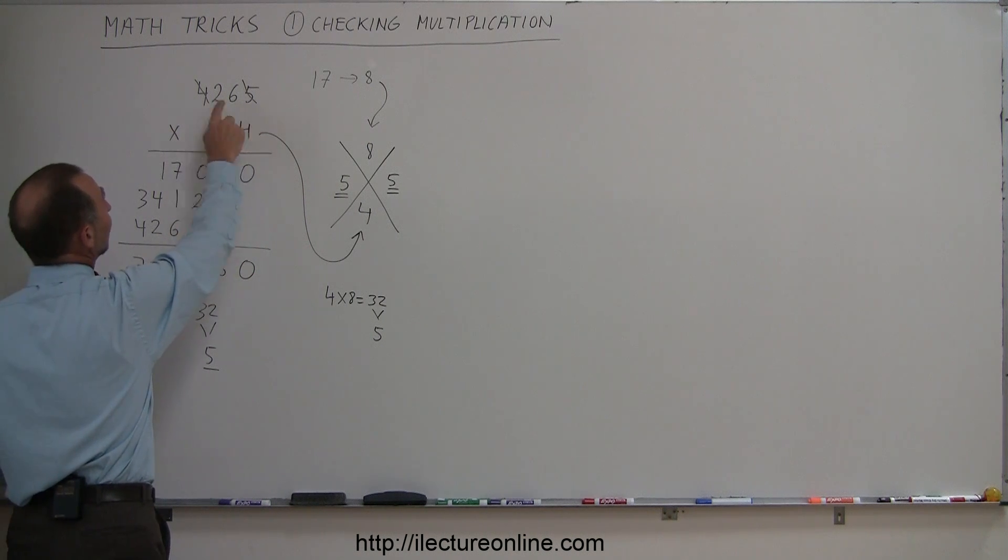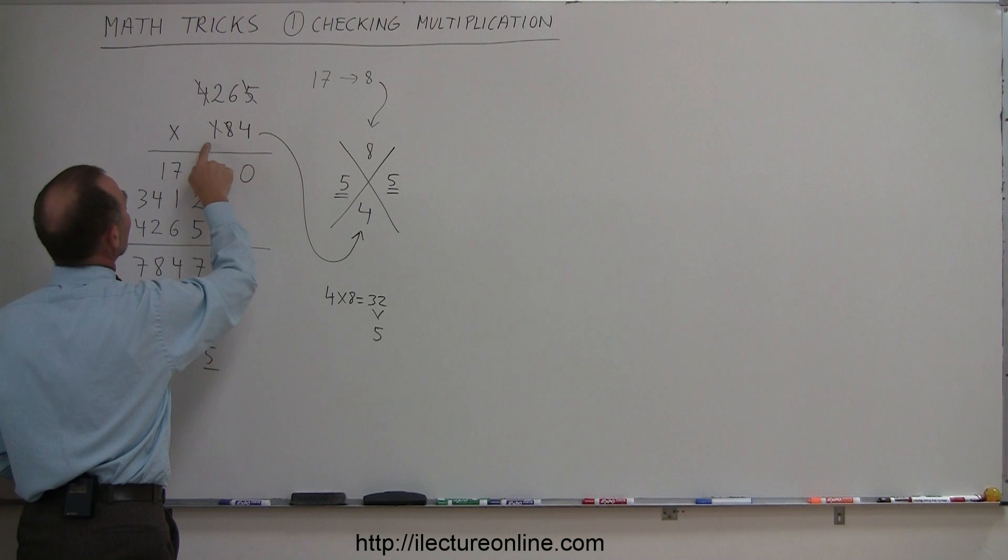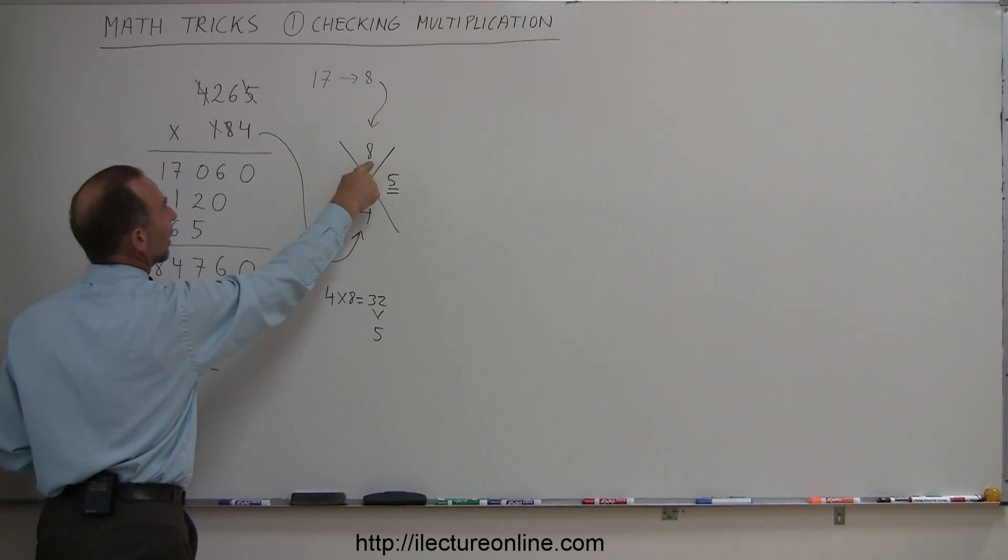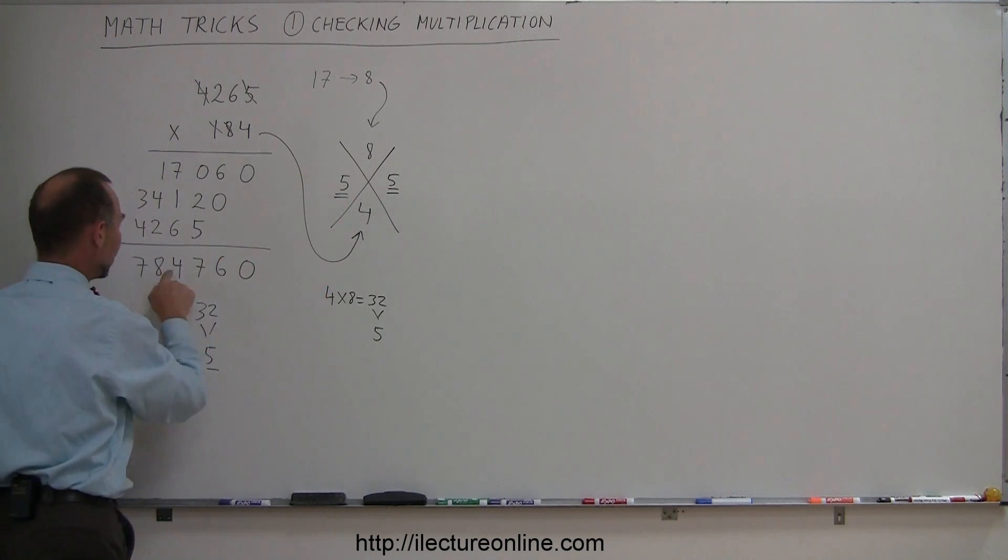Just add up the top numbers together. Whenever two numbers add up to 9, get rid of it. 2 plus 6 is 8. Over here, 1 and 8 is 9, get rid of that, you're left with a 4. 4 times 8 is 32, 3 plus 2 is 5. Add all these numbers together: that's 15, 19, 26, 32, 3 plus 2 is 5.